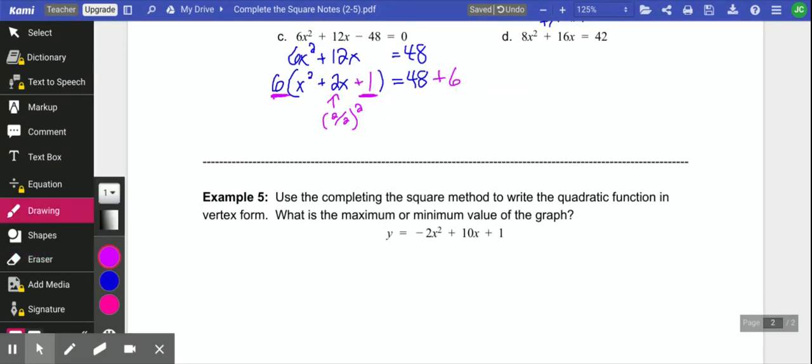Now that we've done that, just leave that 6 out there, it's fine. We need to factor the side. It's always going to be a perfect square. We're looking for numbers that multiply to 1 and add up to 2, which of course are 1 and 1. And over on this side, we get 54.